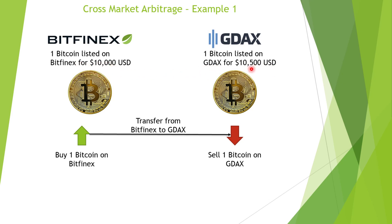Between these two exchanges, you may have different prices for Bitcoin. You may have one trading at $10,000 and one trading at $10,500. Why might this happen? It's not the exchanges that set these prices — it's you and I who are trading these coins that set these prices. For whatever reason, there may be a price discrepancy at a certain point in time, and there's a profit opportunity to take advantage of this price difference.